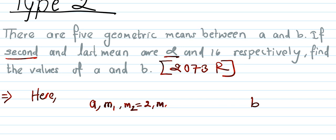The third and fourth means are also present. Since there are 5 means, the fifth mean is the last mean. The question states that the last mean equals 16, so m5 = 16.